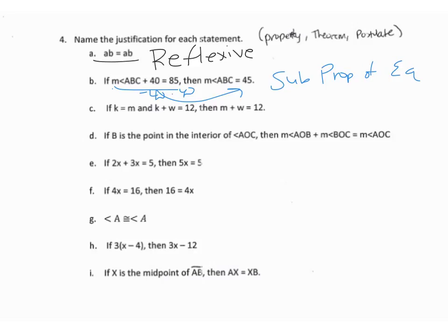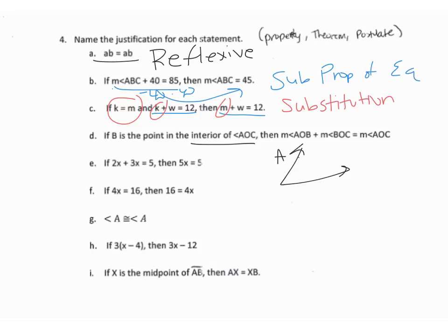If K equals M and K plus W equals 12, then M plus W equals 12. K plus W equals 12 is very close to M plus W equals 12 — the only difference is K and M. Since we know K equals M, we used substitution. If B is a point in the interior of angle AOC, then the measure of angle AOB plus the measure of angle BOC equals the measure of angle AOC — that's the angle addition postulate.